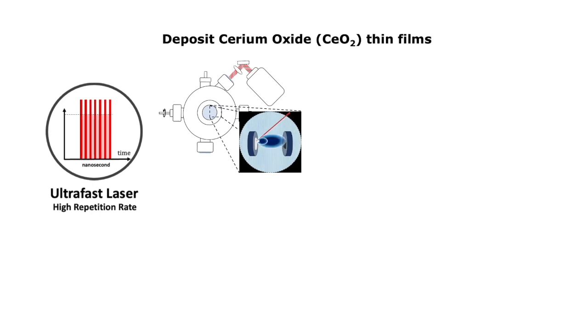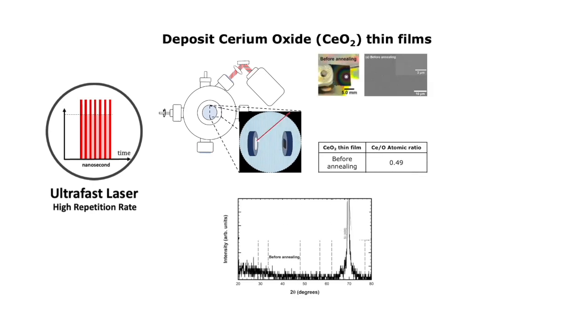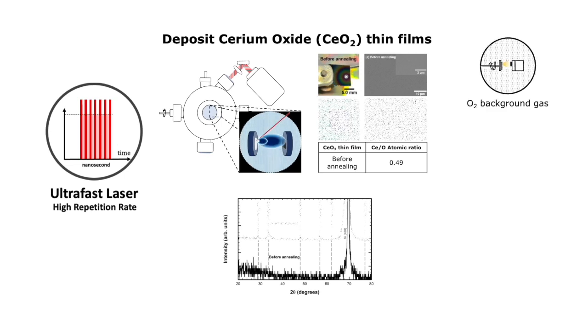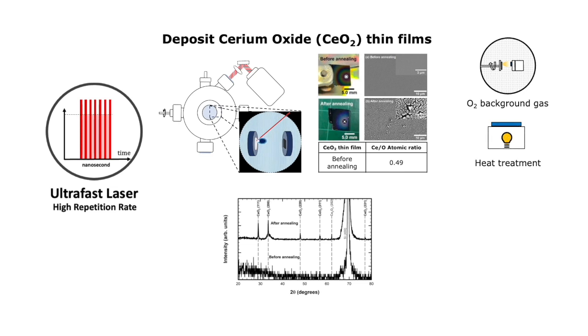We discover that oxygen background gas is necessary for growing films with exact stoichiometry of the oxide target. The post annealing helps the film to crystallize but also leads to the formation of mixed phases of cerium. These mixed phases have been avoided by preparing a thicker film.